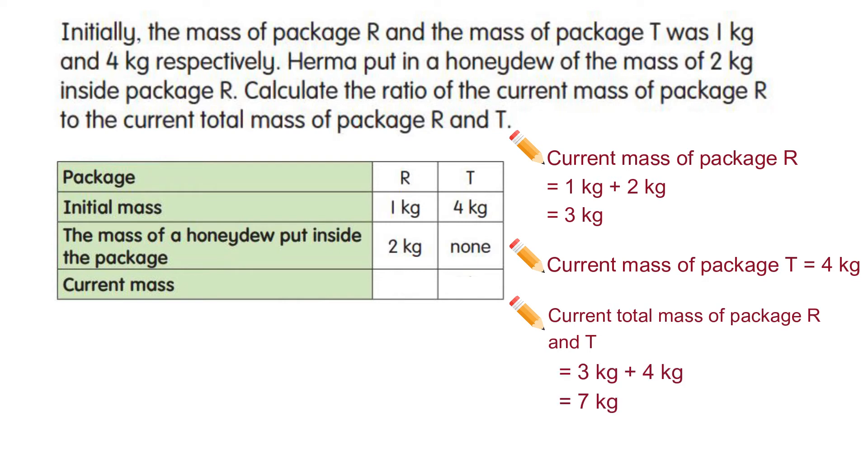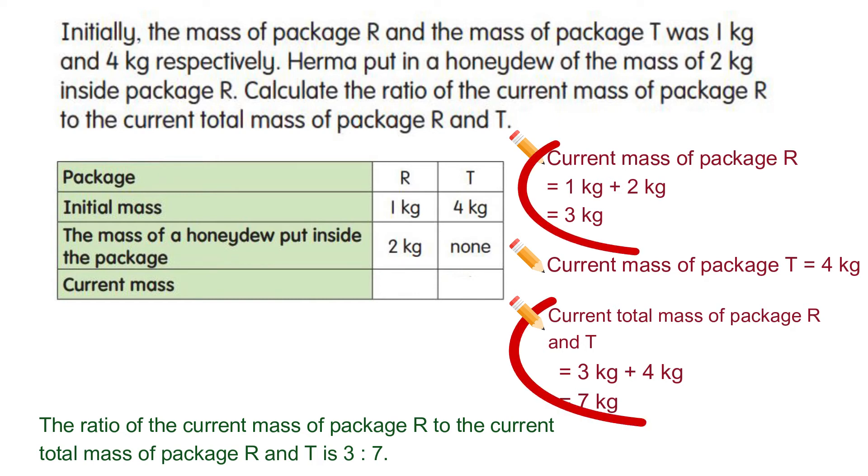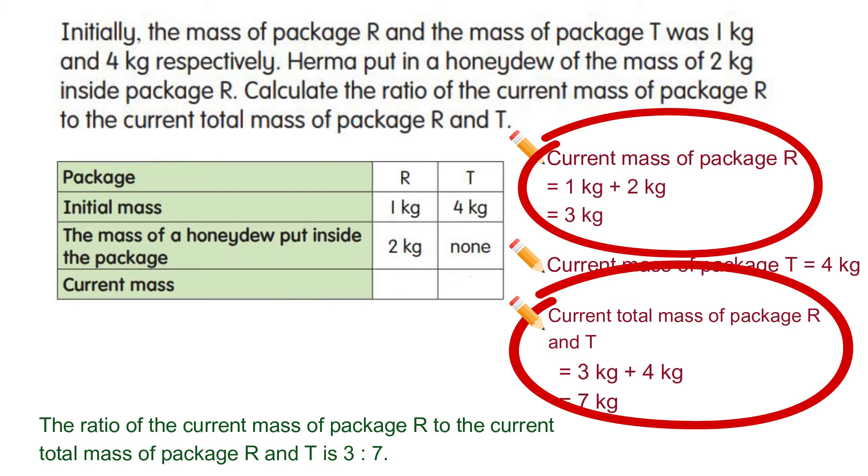Three kilograms plus four kilograms, we'll get seven kilograms. Now the ratio of current mass of package R to the current total mass of package R and T is a ratio of three to seven.